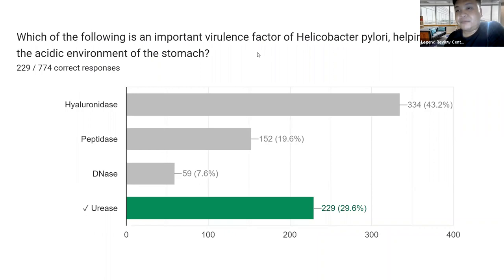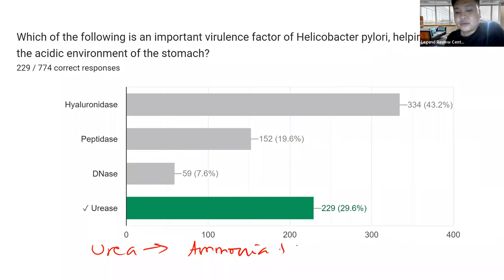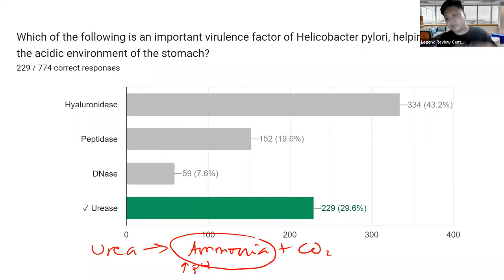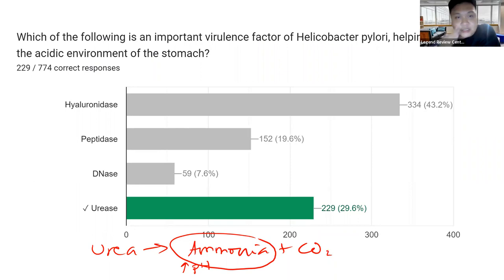Next: Urease is an important virulence factor of H. pylori, helping it survive in the acidic environment of the stomach. The answer is urease. Urease breaks down urea to ammonia and CO2. The ammonia causes an increase in pH — making the stomach environment more alkaline, allowing H. pylori to survive. H. pylori grows optimally at pH 6 to 7 and would normally be killed in the acidic gastric lumen.